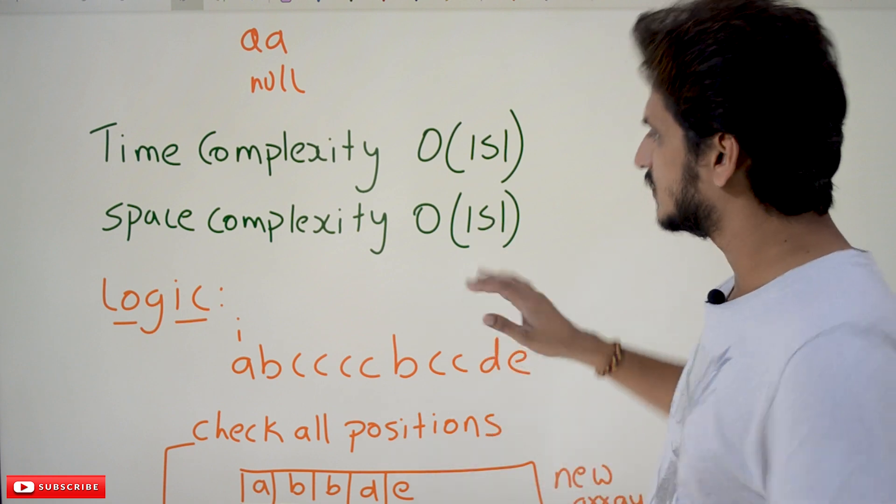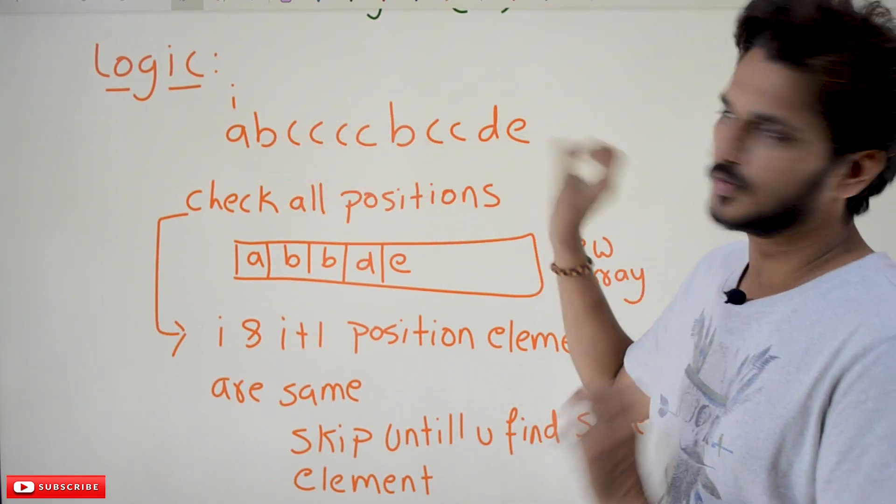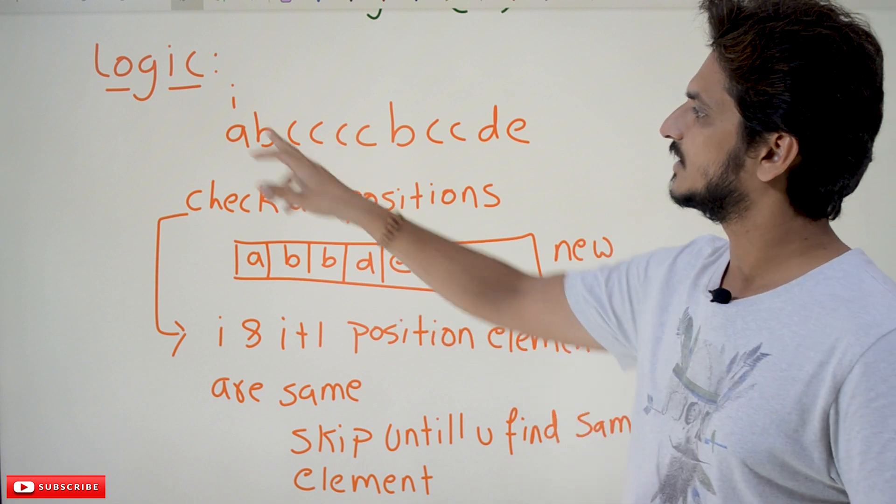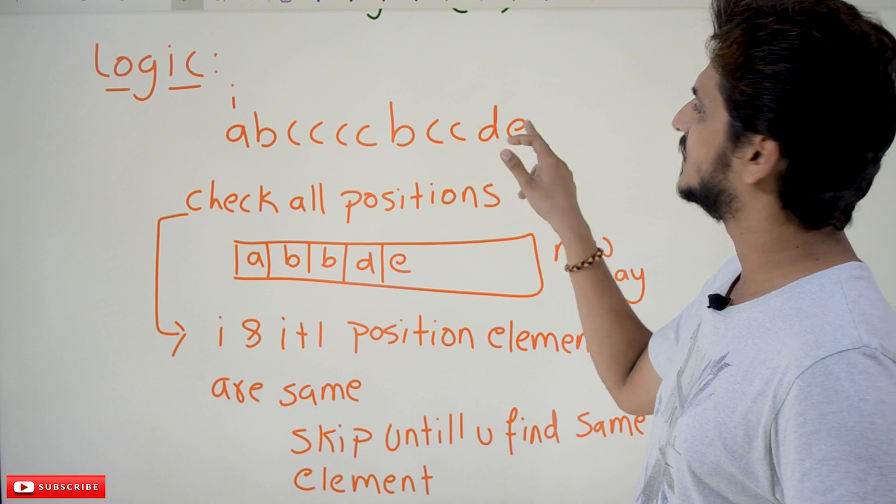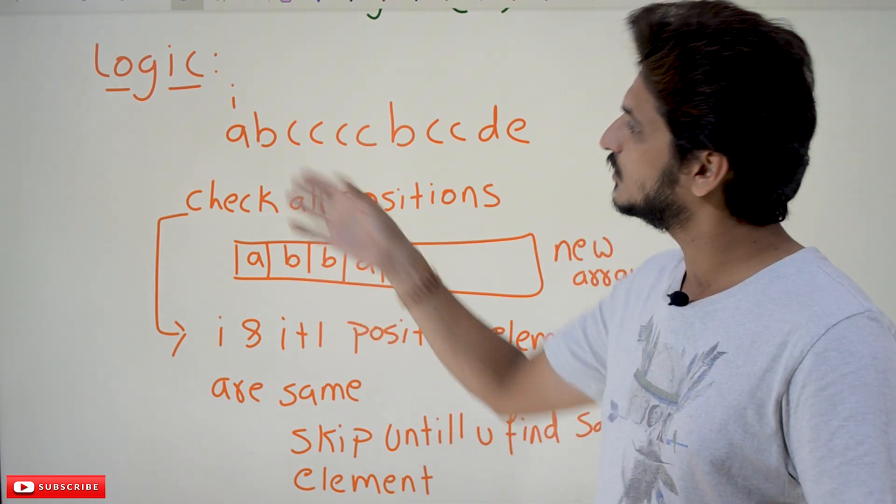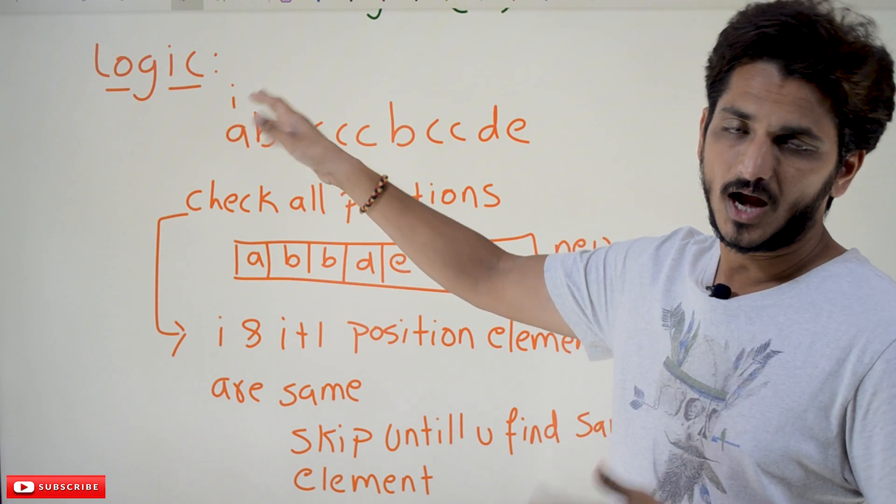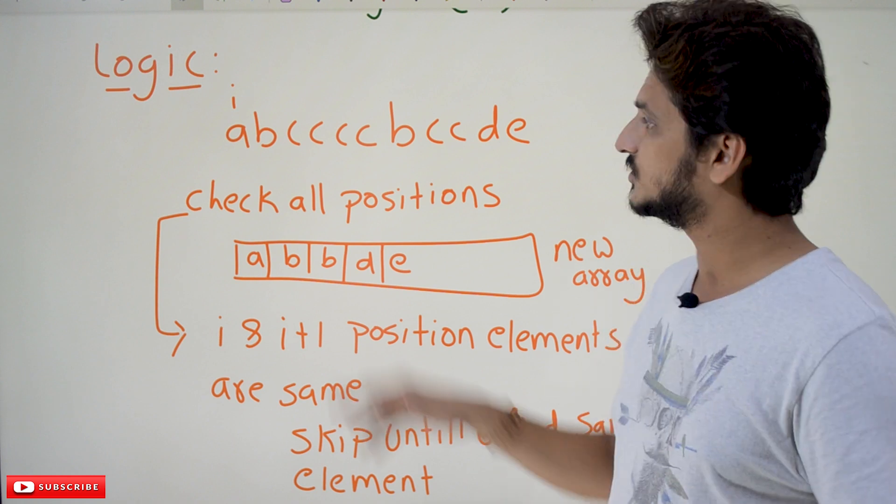So the logic goes like this, logic is simple. We have to check all the positions in the given string. Let's take an example, abccccbccde. So we have to check all the positions. So that's why we are going to use a variable i and we will loop on all the input characters and we are going to check the condition.